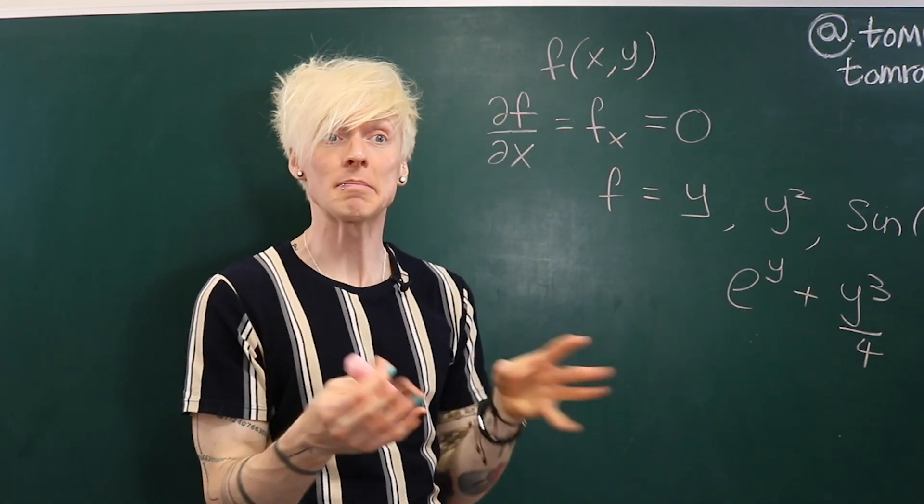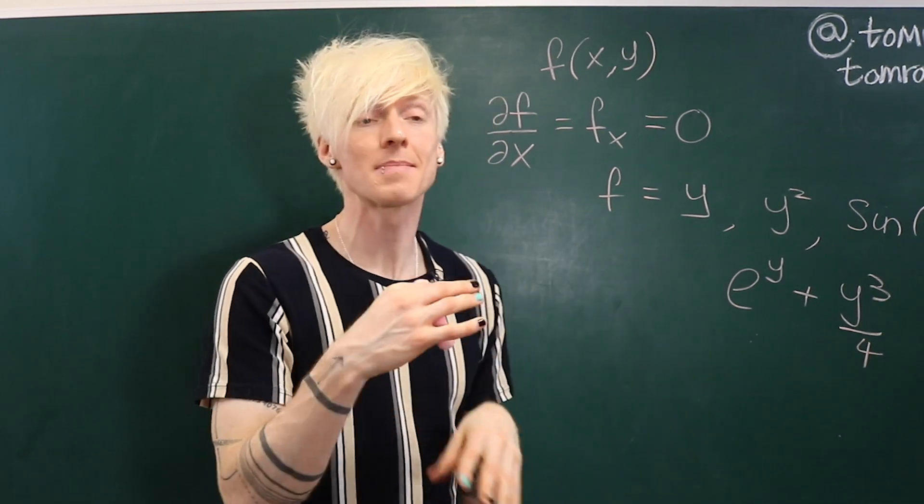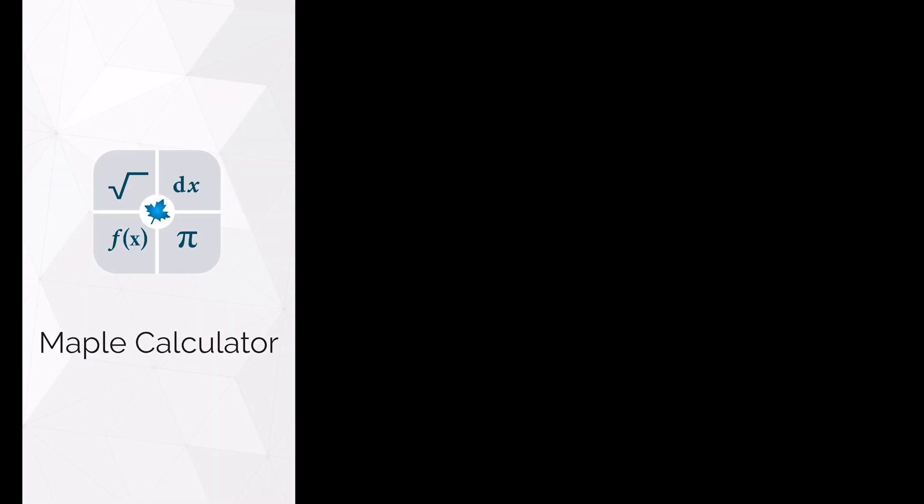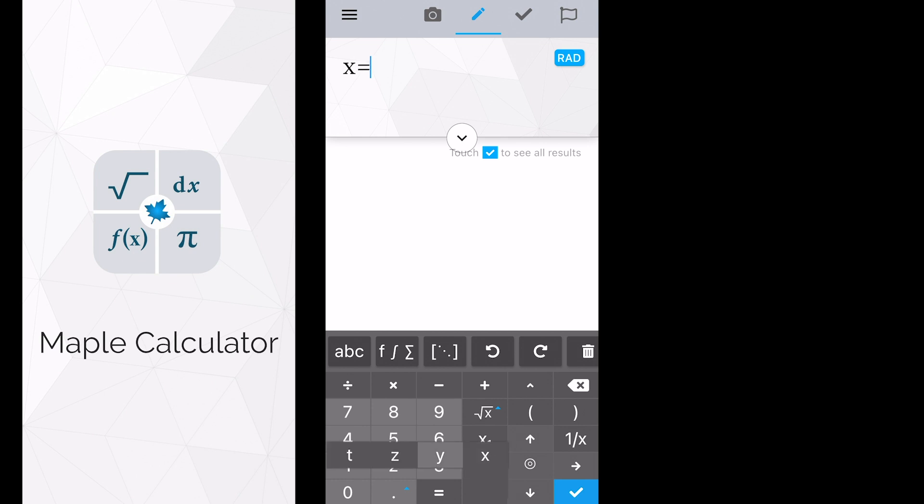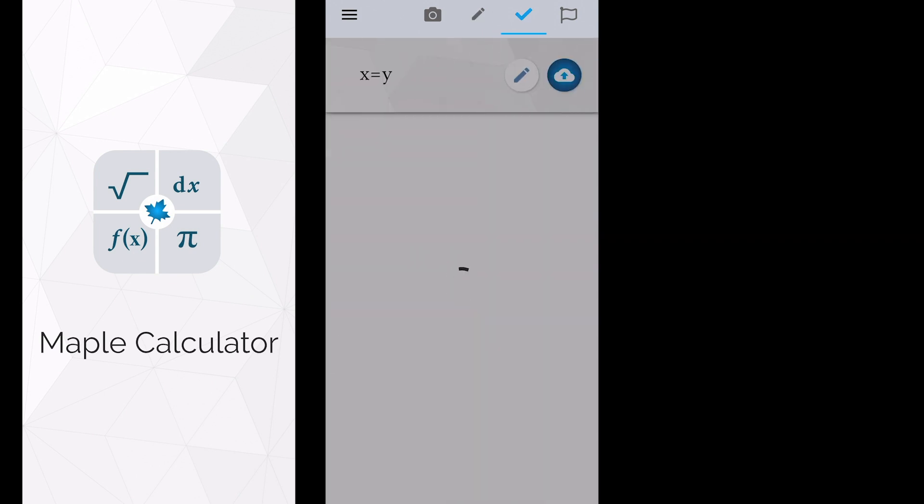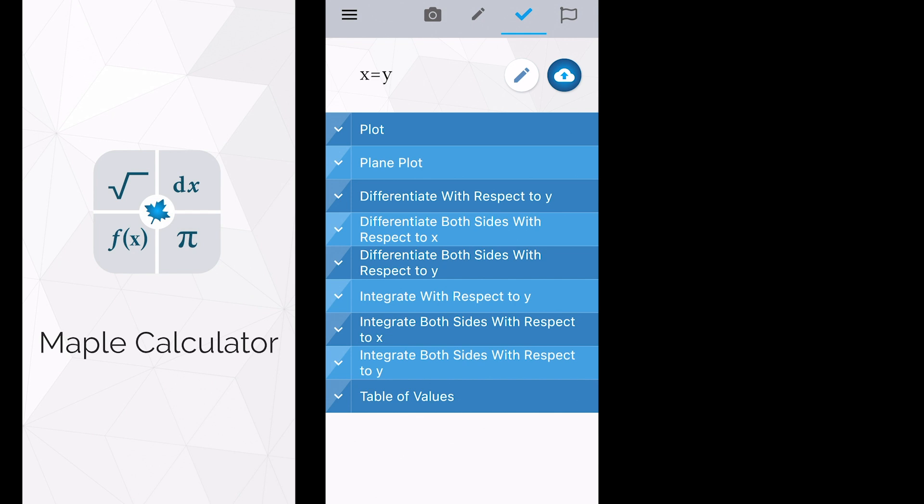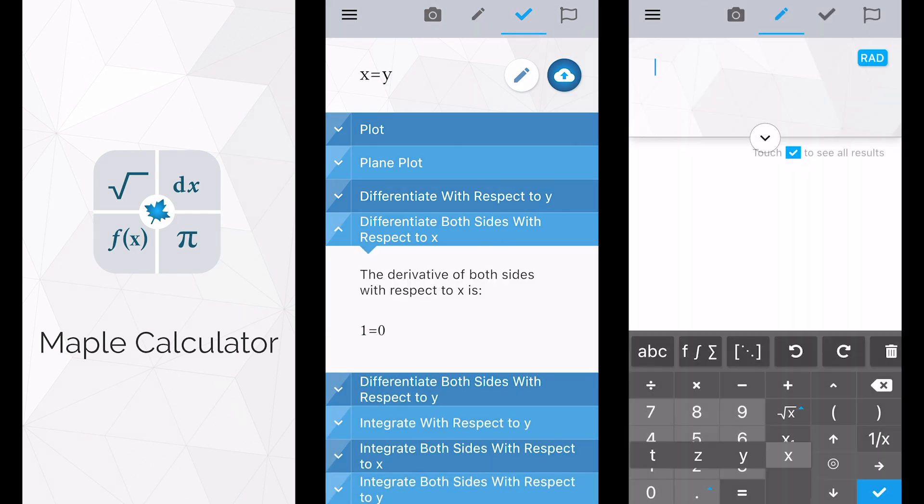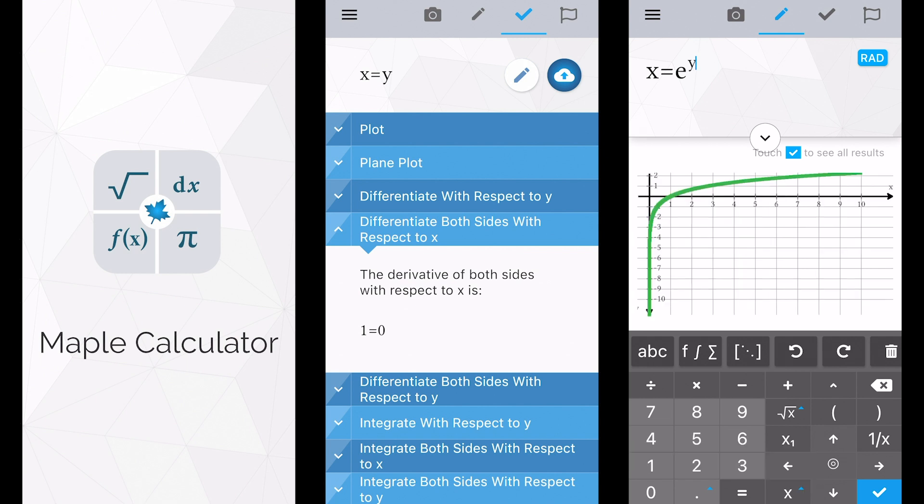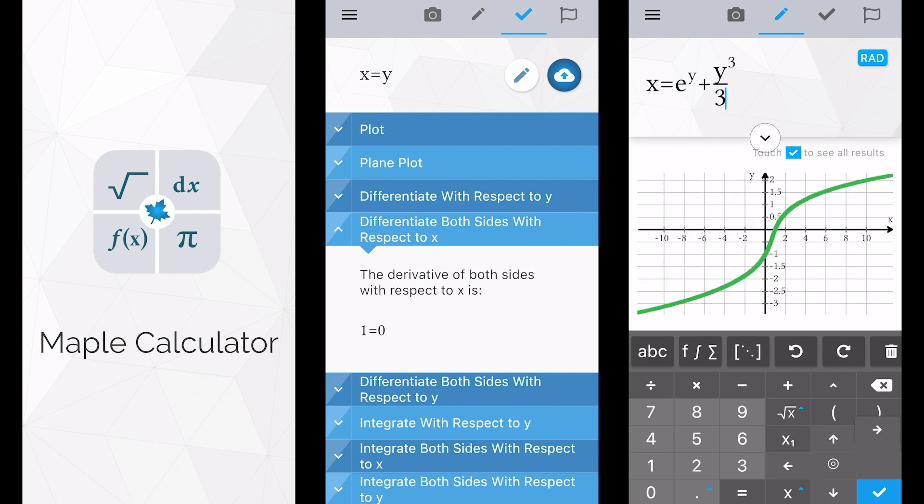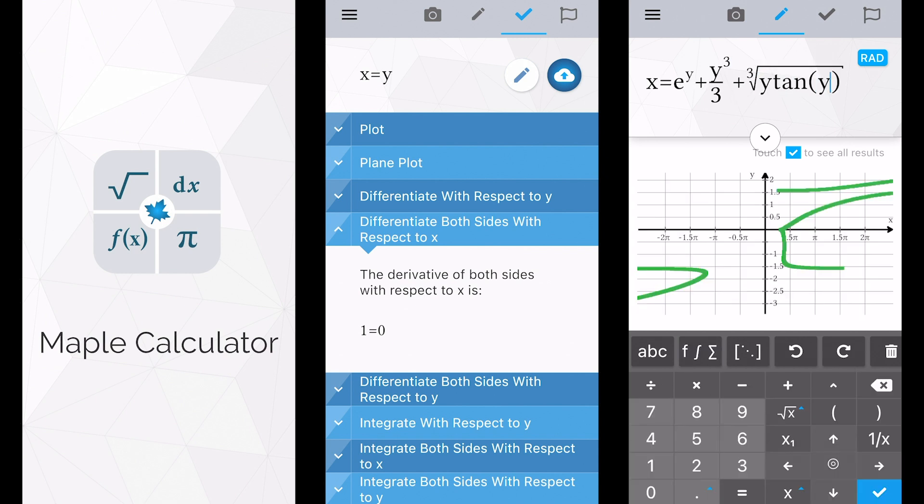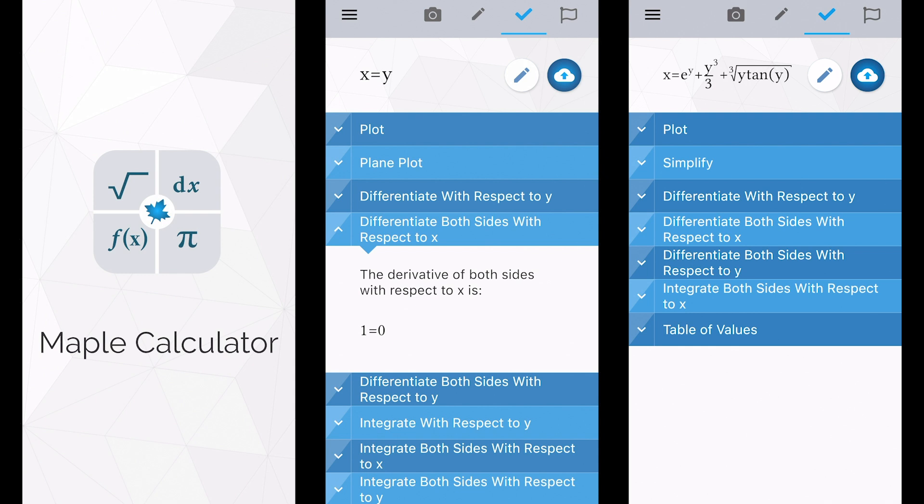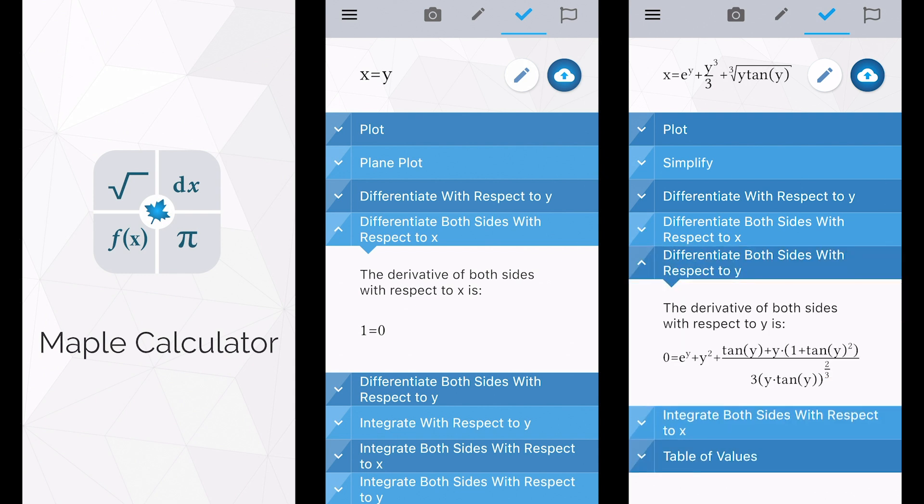And if you don't believe me you can try this for yourself in the Maple Calculator app. Write any expression that's a function of y only and when you click on the x derivative which is one of your options you'll see that the answer is always zero. No matter how complicated the expression that you input. You can also of course see the y derivative for any weird and wonderful function that you can input and I can assure you it is quite good fun seeing just how messy and creative you can get with your functions.